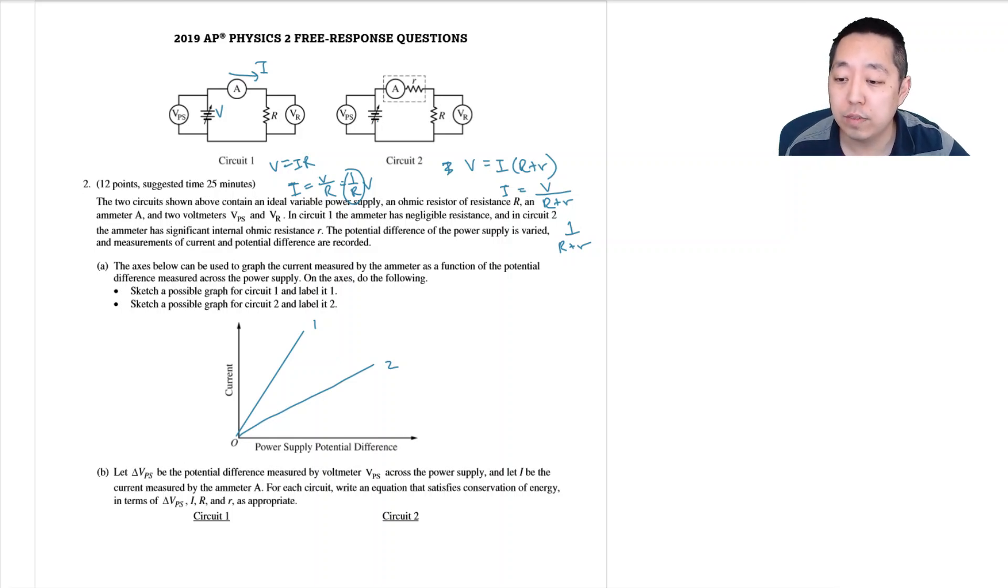So let delta VPS be the potential difference measured by the voltmeter VPS across the power supply and let I be the current measured by the ammeter A. For each circuit, write an equation satisfying conservation of energy. The equivalent rule that we use in circuits is KVL, Kirchhoff's voltage law. So what you're going to do is you're just going to create an equation that goes through the loop and just adds everything up.